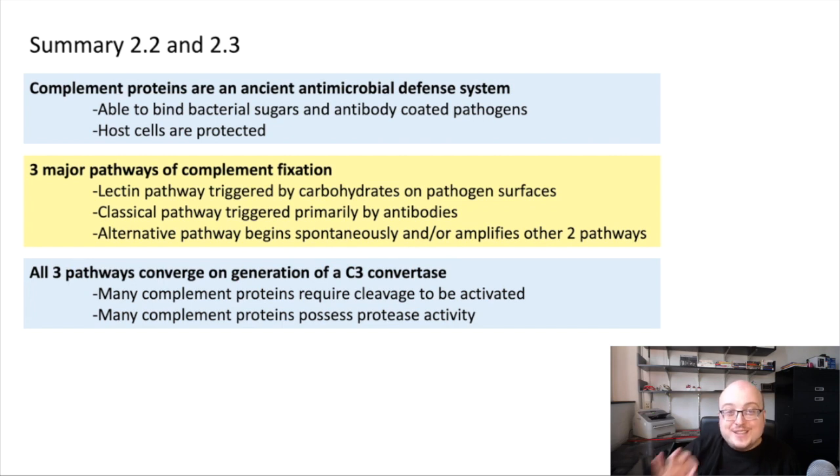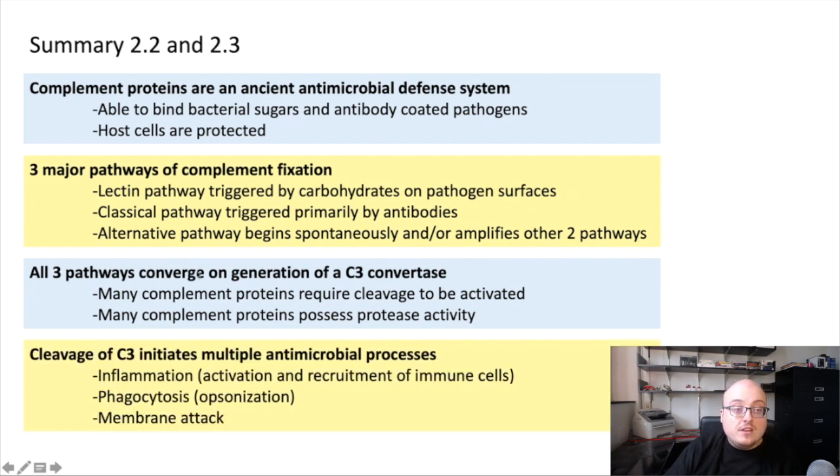All three pathways, once again, converge on generation of a C3 convertase. So we've seen over and over that many complement proteins require cleavage to become activated, and usually the protein upstream of them, immediately upstream of them in the process, has proteolytic activity which cleaves them, and so it's just a stepwise cascade. That's why we call it the complement cascade. It's just one proteolytic activation step after another. So the C3 convertase is basically the same in the case of the lectin and the classical pathways, and the alternative pathway has a couple of its own C3 convertase complexes, which involve factors B and D.